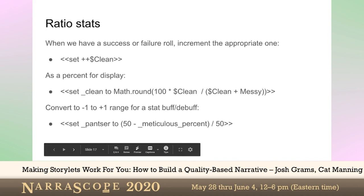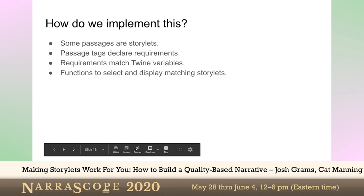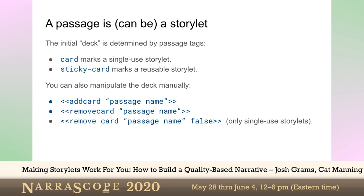So, how do we do storylets? Some passages are storylets. We use Twine's passage tags to set their requirements, and then the requirements can match against your Twine variables. We have a few functions to select and display the matching storylets. You tag a passage as 'card' to make it a single-use storylet — once you see that content, it'll just go away. If you have something like a location, or maybe a radio station you're going to come back to again and again, you make it a 'sticky card' so it stays in the deck.